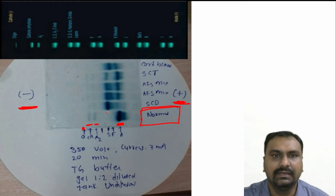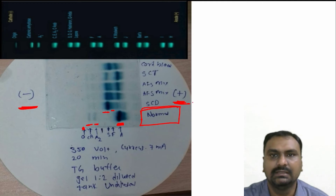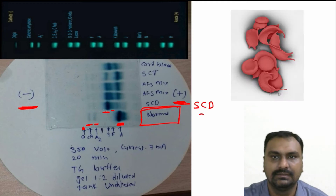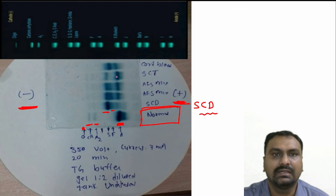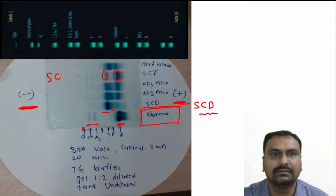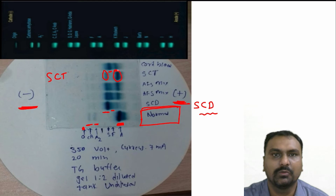If you find a band at the S region and a light band of F, that will mainly be sickle cell disease. This is the control AFS mixture. In the case of a sickle trait patient, there is a band at the S region as well as at the A region — so that will be sickle cell trait. You can also appreciate a band at the fetal region and some amount of adult, which will be cord blood or cord blood pattern.